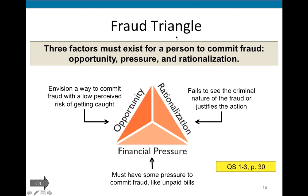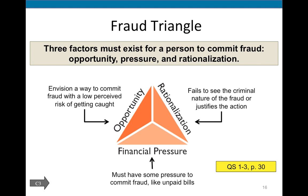The fraud triangle is an important concept. Fraud is an intentional misappropriation of assets — intentional, different from a human error. Three factors must exist for a person to commit fraud. First, opportunity: the individual sees a low perceived risk of getting caught, and managers can reduce this with internal controls. Second, rationalization: the person feels undervalued or underpaid and steals to compensate themselves. Third, financial pressure: unpaid bills, drug abuse, divorce, or any kind of financial hardship.